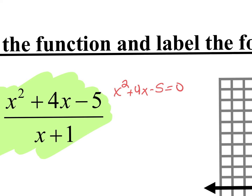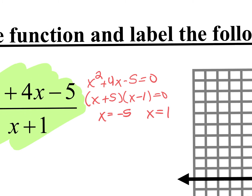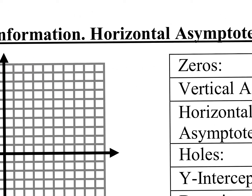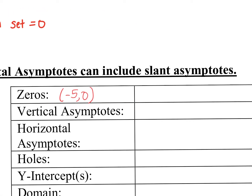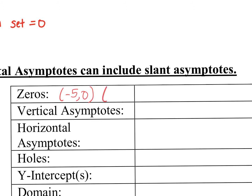What are the factors of negative 5 that give negative 5 when multiplied but positive 4 when added? x plus 5 and x minus 1. When I set those equal to zero, I get x-intercepts at x equals negative 5 and x equals positive 1. So on the line where it says zeros or x-intercepts, you would write negative 5 comma 0 and 1 comma 0.